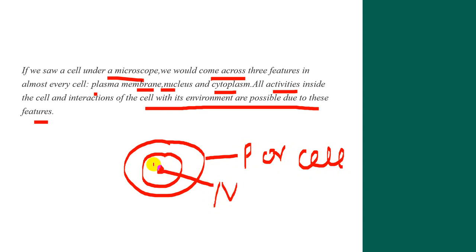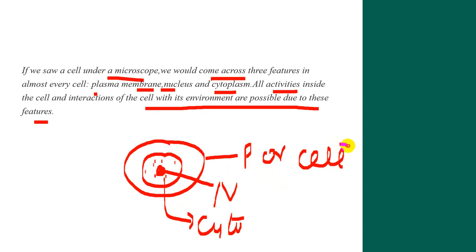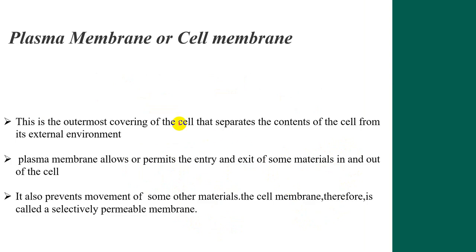Inside the cell, we have the nucleus, and the inner part of the cell is the cytoplasm. These three features — plasma membrane, nucleus, and cytoplasm — govern all interactions, activities, and responses to the external environment.